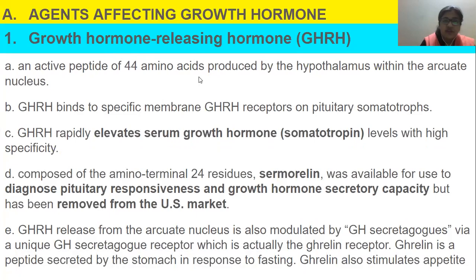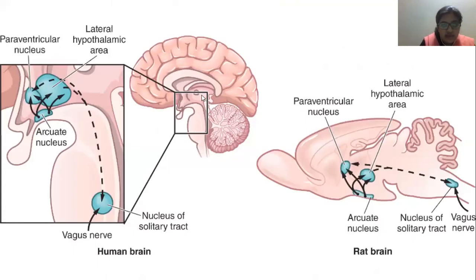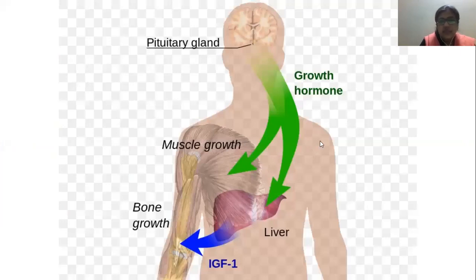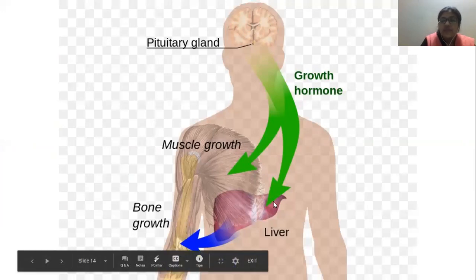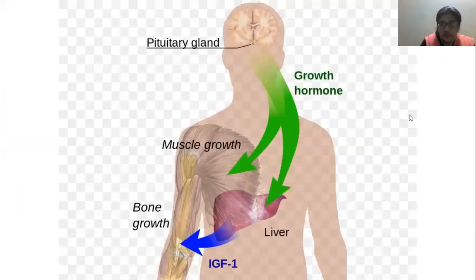GHRH is an active peptide of 44 amino acids produced by the hypothalamus, within the arcuate nucleus. Looking at a diagram of the pituitary gland and hypothalamus, the arcuate nucleus is located above the pituitary gland. Growth hormones released from there affect muscle growth, bone growth, and the liver, where proteins are made. GHRH binds to specific membrane GHRH receptors on pituitary somatotrophs.